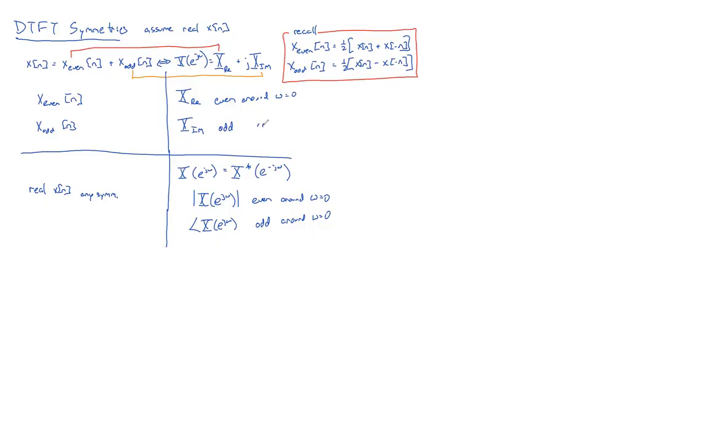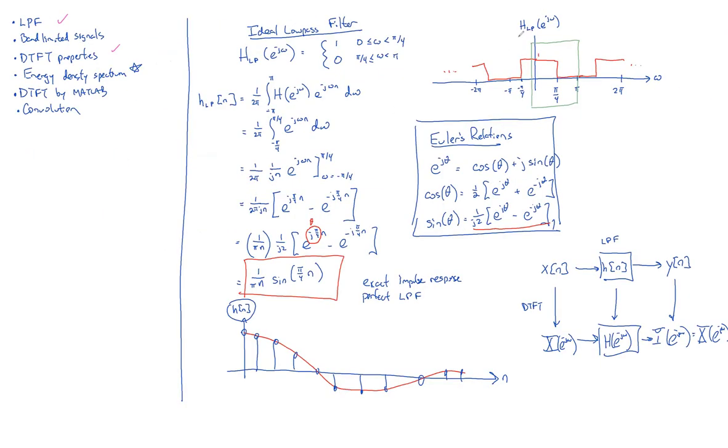But normally, we don't draw DTFTs as real or imaginary parts. We usually draw them in polar form as magnitudes and angles. And so, get used to seeing these magnitudes right over here in the upper right. Get used to seeing the magnitude being drawn as having mirror symmetry. This particular H low pass is purely real, so its magnitude is its own value and the magnitudes will always be symmetric.